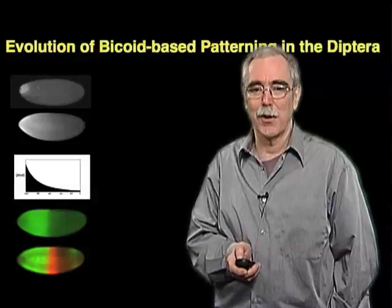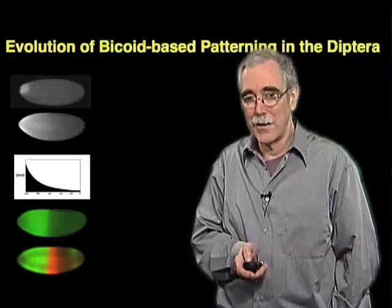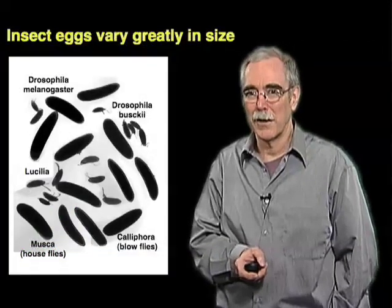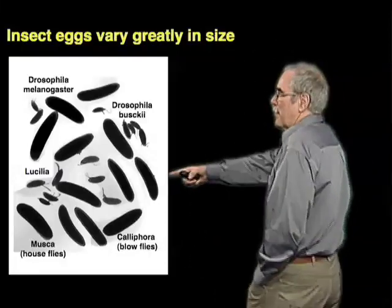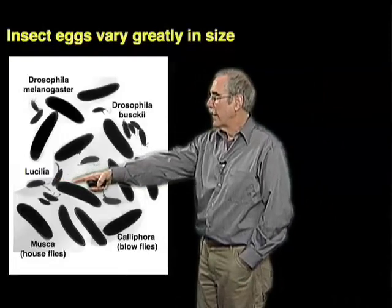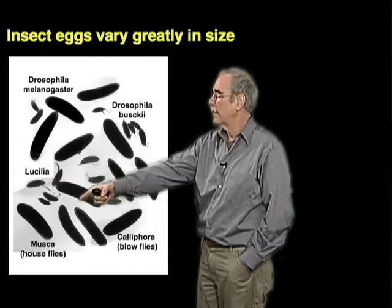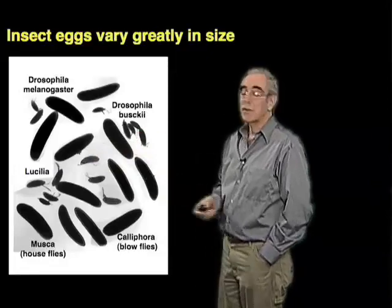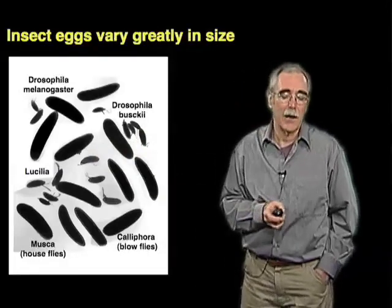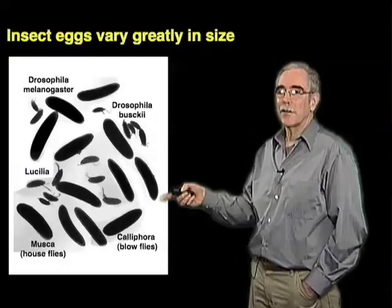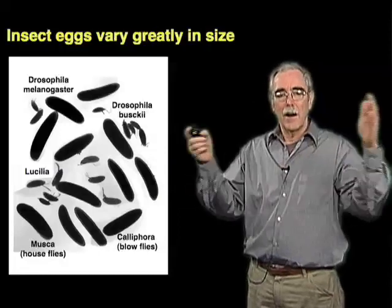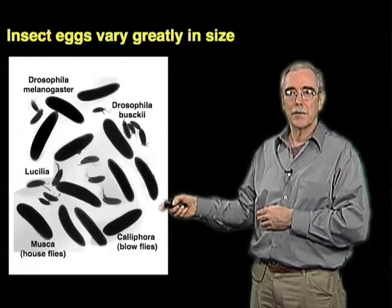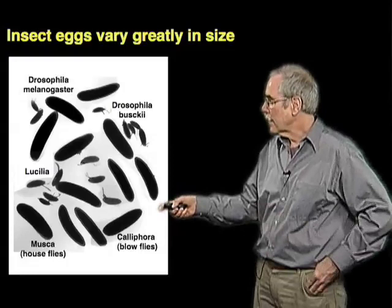Not only are the adult flies of different sizes, but also if you look at the eggs and embryos that these different fly species make, they are also of different sizes. Drosophila melanogaster makes eggs that are about 500 microns long. There are even Drosophila species like Drosophila buski that make even smaller eggs. But there are big flies like Musca domestica, the house fly, or Calliphora blow flies, or green bottle flies, that are much bigger as adults and whose eggs are substantially bigger.